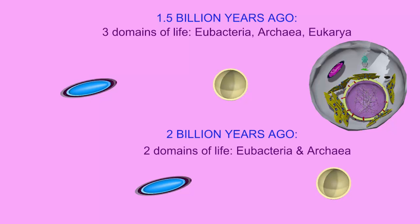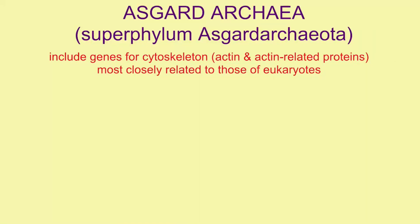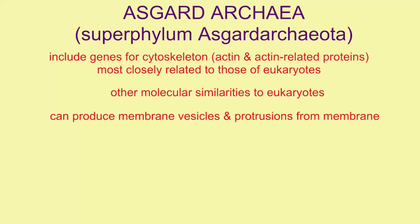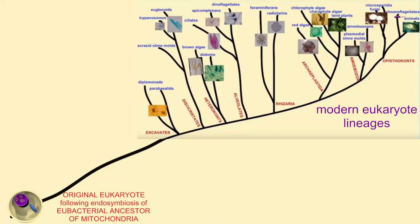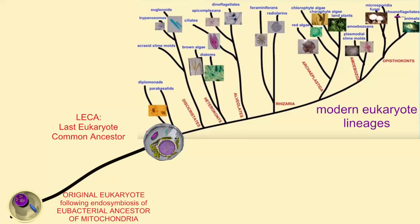Eukaryotes evolved from eubacteria living inside an archaea. But there is clearly a difference between an archaeon with an endosymbiont and what I'll refer to in this video as LECA — the last eukaryote common ancestor — the cell which could have given rise to all of the modern eukaryotic lineages, which would include plants, animals, fungi, and the most primitive protists such as Giardia. What changes would have evolved in the time period between the endosymbiosis and LECA?